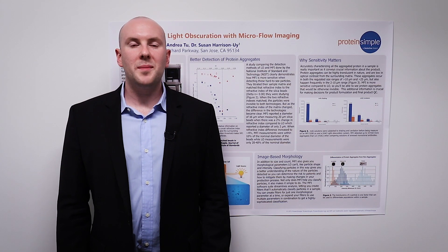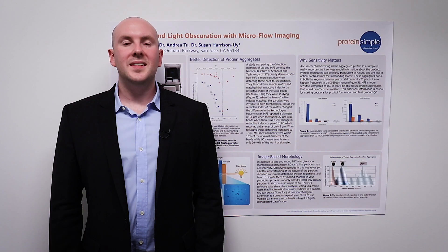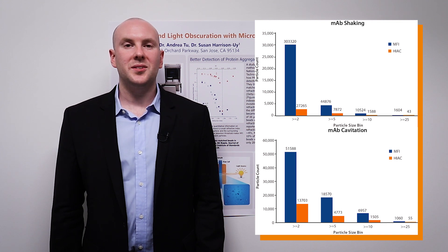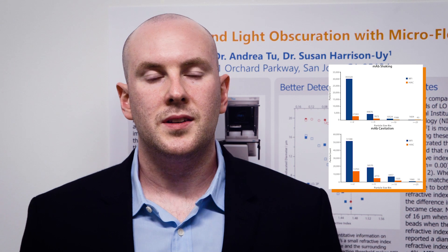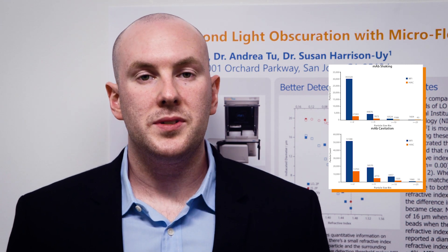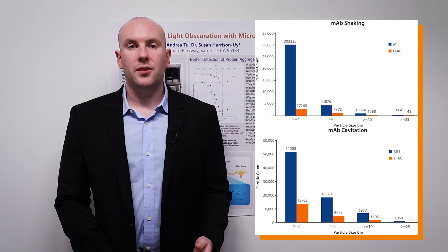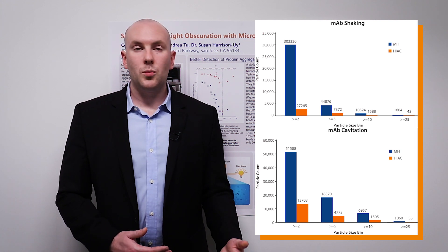This ability to measure particles with low optical contrast to their matrix is especially important for evaluating biopharmaceuticals. Protein-based products have a tendency to aggregate and form highly translucent particles, which light obscuration often misses. In this study, we compared particle levels measured by MFI (represented in blue) and the Hiac light obscuration system (represented in orange). The samples were solutions of monoclonal antibodies subjected to shaking or cavitation stress, with data represented in four size bins: greater than 2, 5, 10, and 25 microns. For both conditions and at all size bins, MFI measures far more particles than light obscuration.